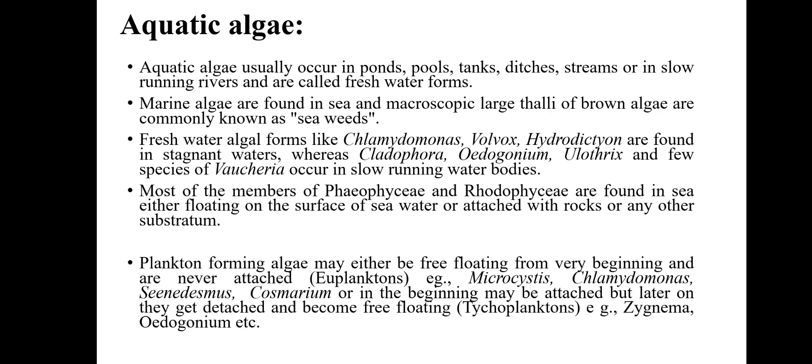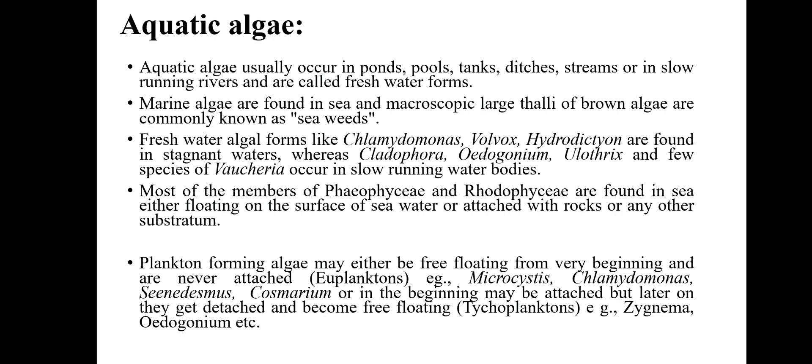Planktons may either be free floating from the very beginning and never attached to the substratum — these are known as euplanktons. Examples include Microcystis, Chlamydomonas, Scenedesmus, and Cosmarium. Or they may be attached in the beginning but later detach and become free floating — these are known as tychoplanktons. Examples of tychoplanktons are Spirogyra and Oedogonium. Remember these points very clearly.